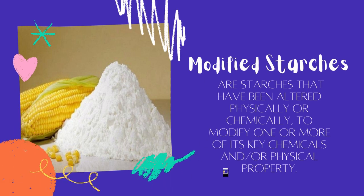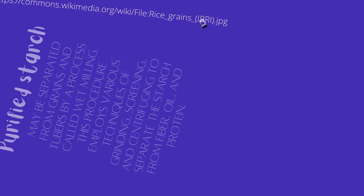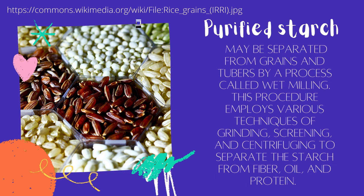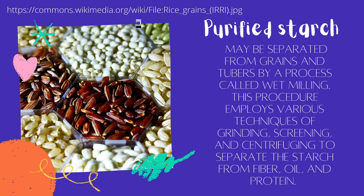Modified starches are starches that have been altered physically or chemically to modify one or more of their key chemical and/or physical properties. Purified starch may be separated from grains by a process called wet milling. This procedure employs various techniques of grinding, screening, and centrifuging to separate the starch from fiber, oil, and protein.